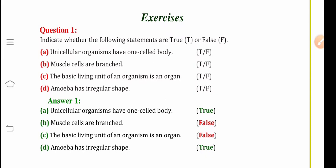Unicellular organisms have one cell body. Now we know that uni means one so this is true. Second is muscle cells are branched. Well muscle cells are not branched and they are spindle shaped so this statement is false.